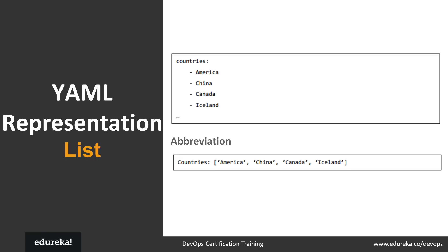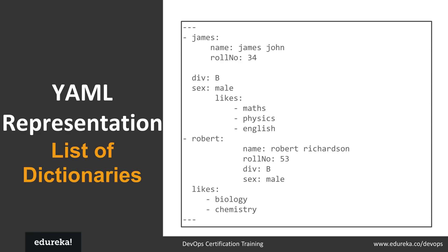You can also represent lists in a YAML file. Every element of the list should be on a new line with the same indentation, starting with a hyphen and a space. For example, a 'countries' list would have entries like '- America', '- China', '- Canada', '- Iceland'. In abbreviated form, this is written as `countries: [America, China, Canada, Iceland]`. YAML also uses the pipe `|` symbol to include new lines and `>` to suppress new lines when showing multiple lines; in both cases, indentation is ignored.